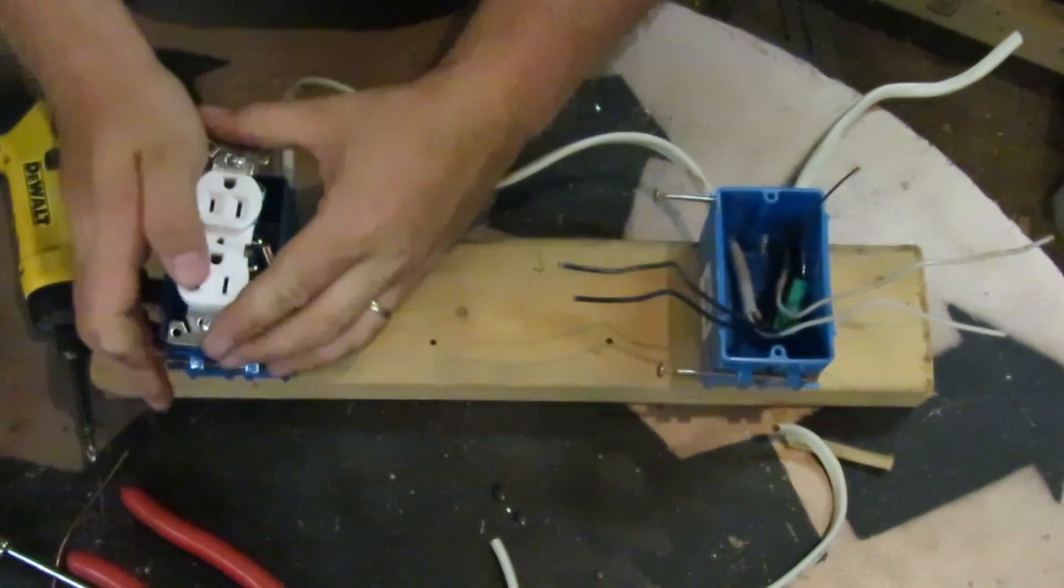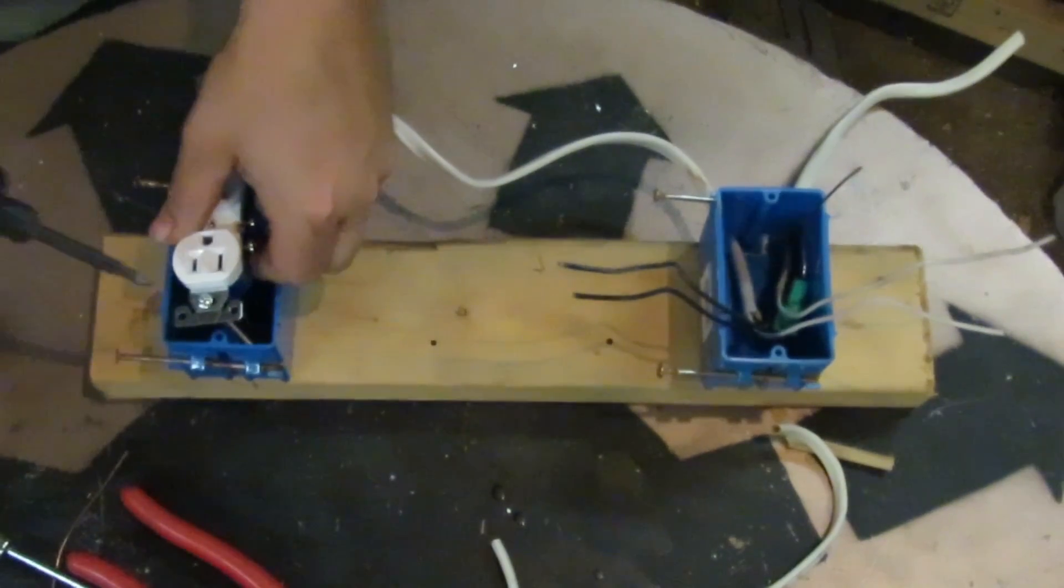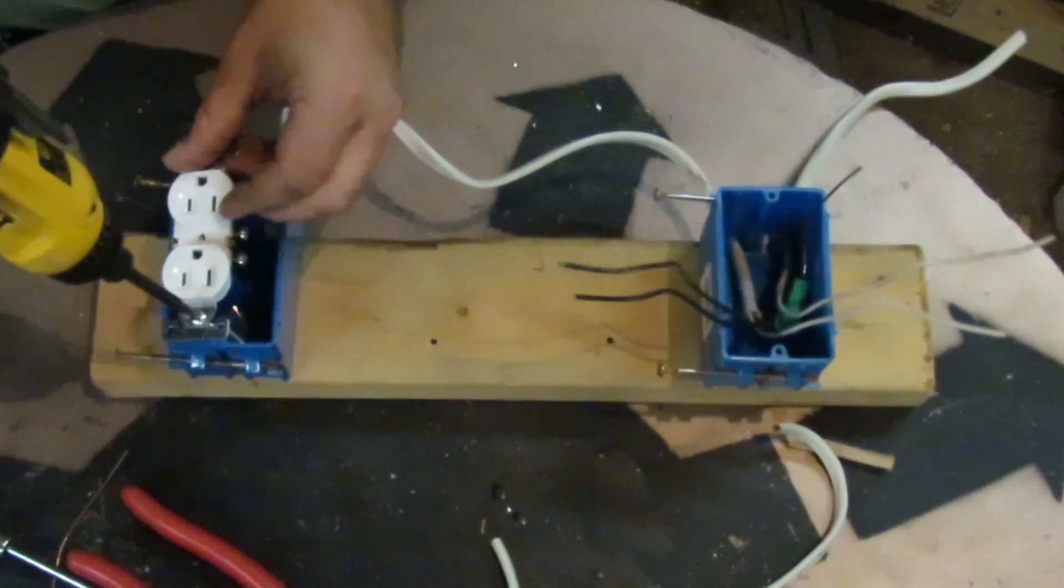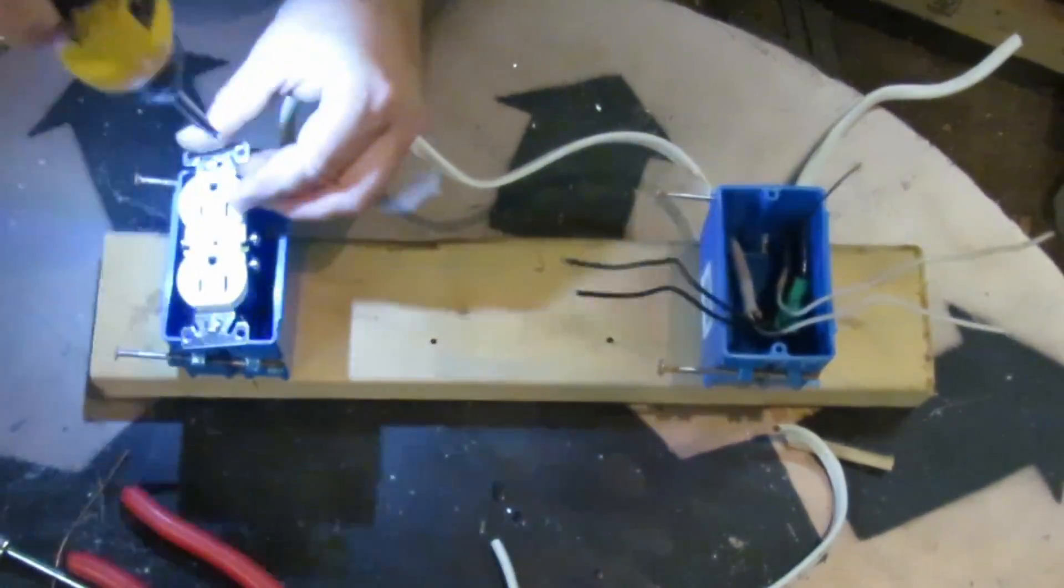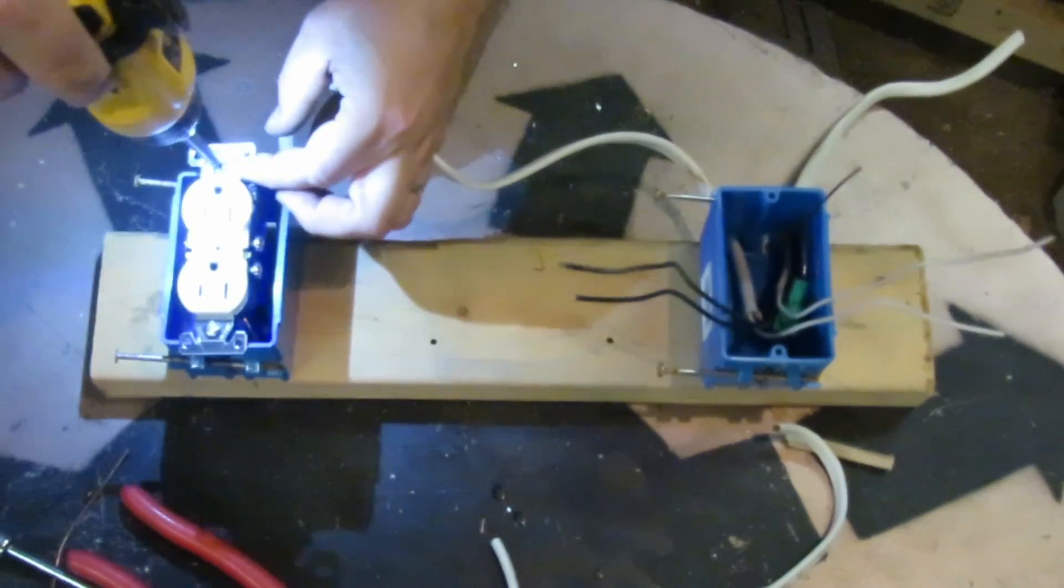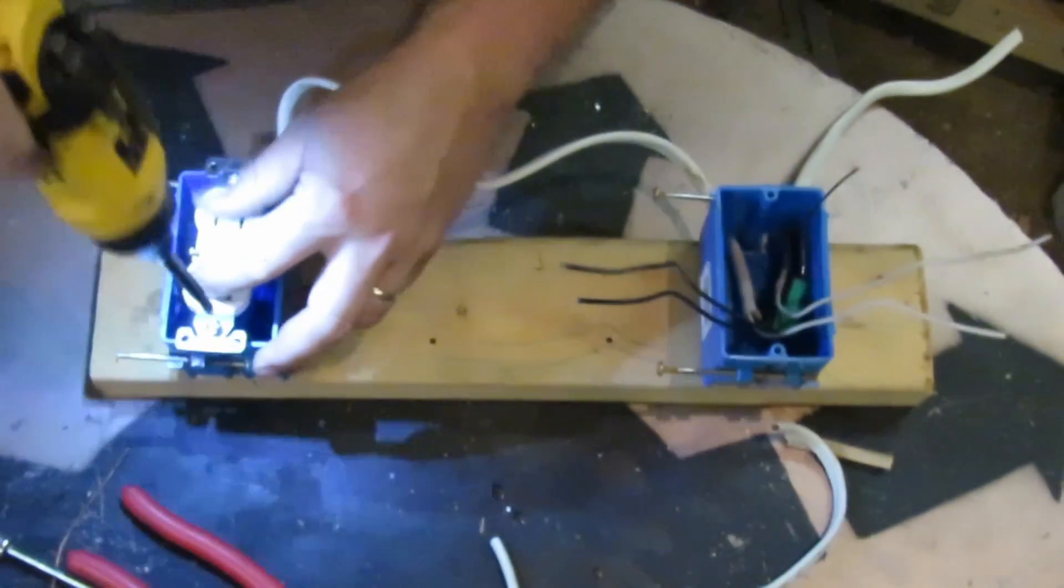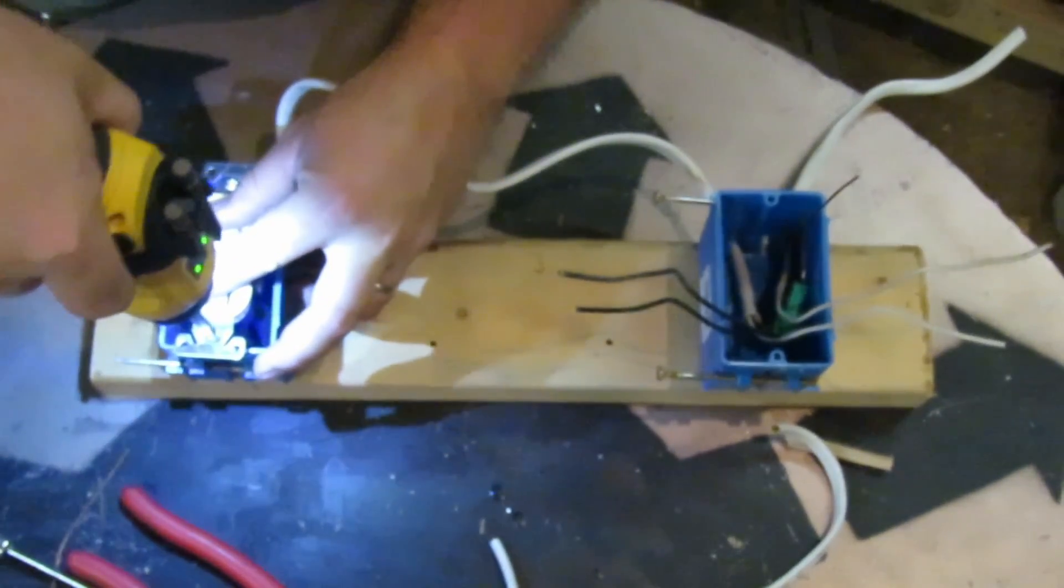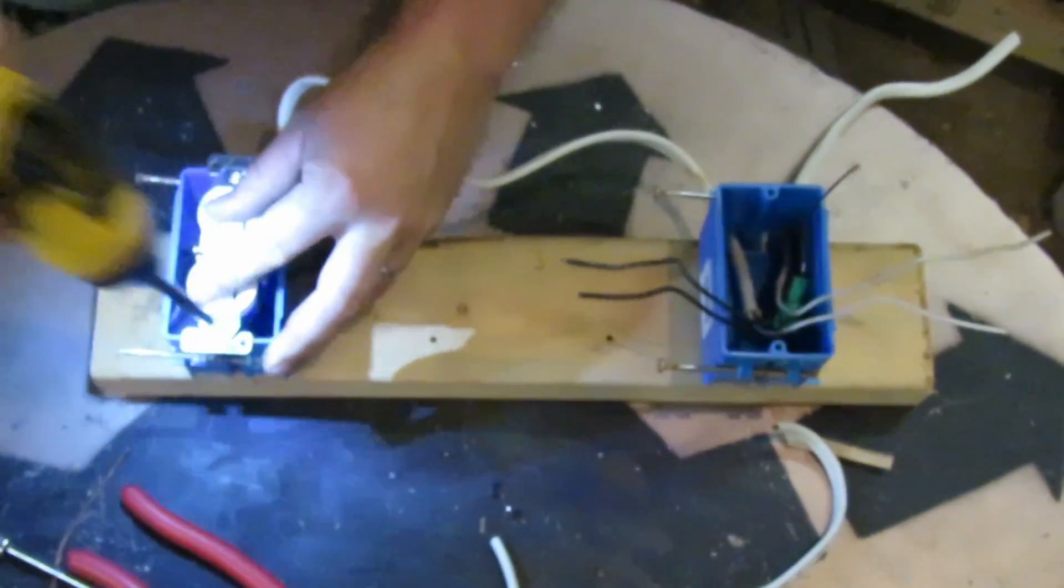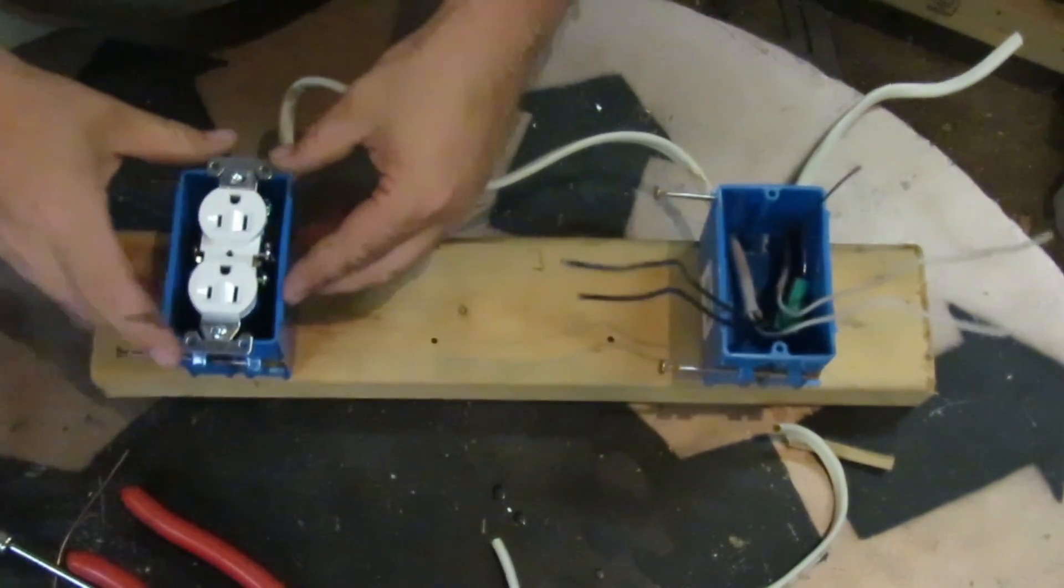And then all that's left is screwing down the receptacle into the box. And you don't need a drill to do this. You could do this with a hand screwdriver. And you're done.